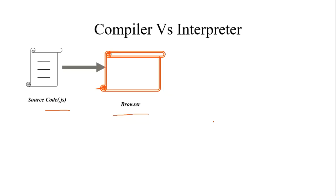So, compiler translates only once. An interpreter translates every time whenever you want to execute. And remember one thing, due to this reason, interpretation process is quite slow.